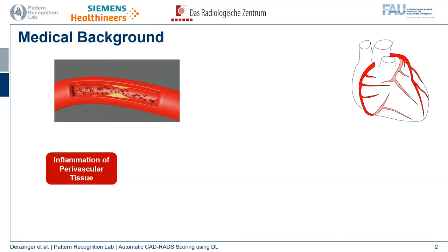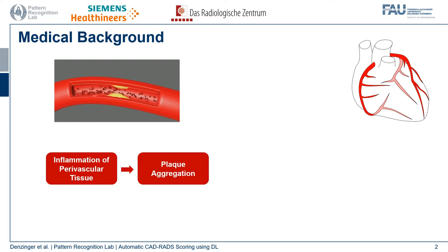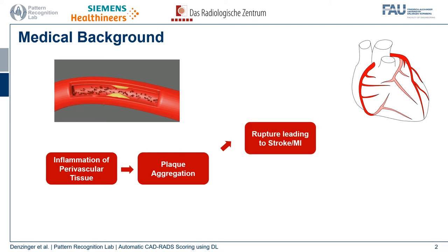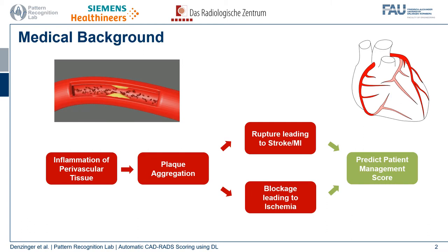Due to inflammation of the perivascular tissue caused by perturbations in the blood flow, plaque deposits can aggregate within the vessel wall. These plaque deposits can rupture, which leads to adverse events like stroke or myocardial infarction. They can also narrow the lumen, which in severe cases leads to malperfusion of the heart muscle and therefore ischemia.